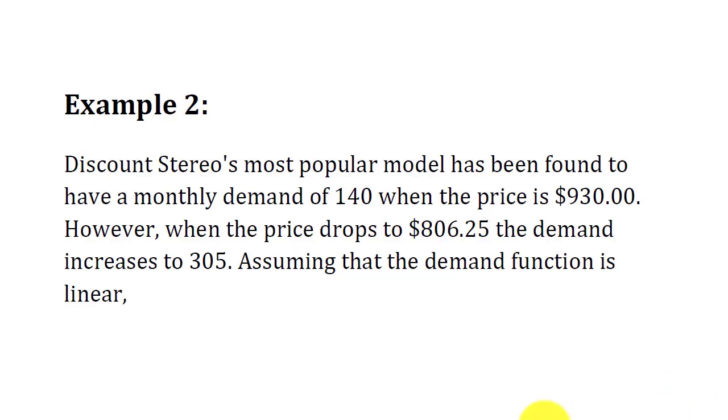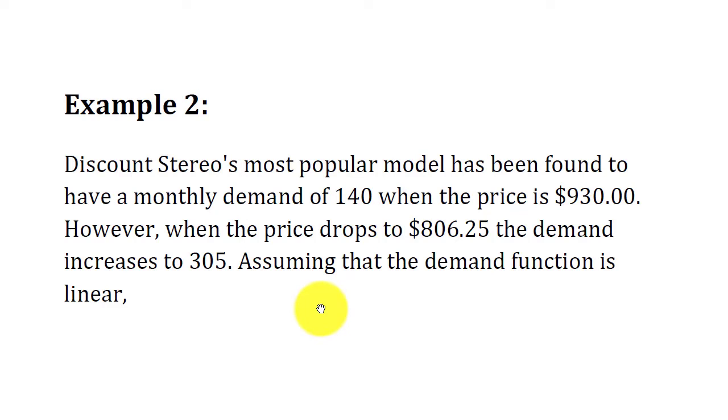Example 2 is brought up entirely to clarify the idea from Example 1 about why you need the flexibility to write your demand or supply equation from one form to another. This example draws the same information from Example 1 — Discount Stereos with the same pair of values — but the kind of question being asked is different. We are still assuming that the demand function is linear.